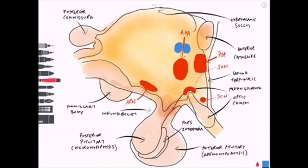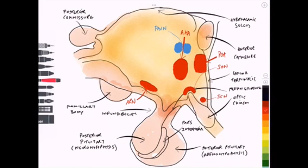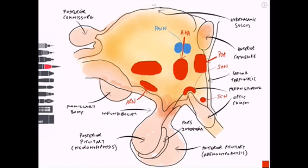This next one is fairly important: the paraventricular nucleus, important for the production of ADH and oxytocin. Oxytocin is important for the contraction of myoepithelial cells in the mammary glands and for myometrial cell contraction in the uterus. So the SON and the PAVN are the important ones to remember.